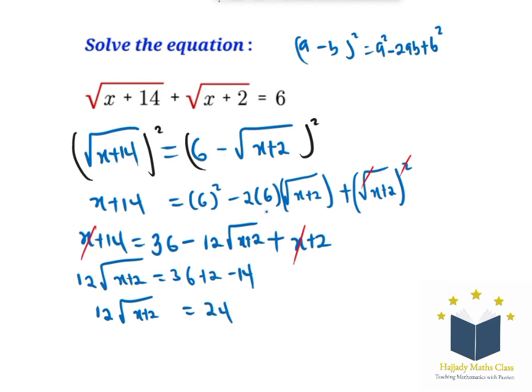The next thing for us to do to get rid of the square root is to square both sides.